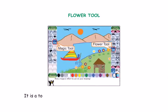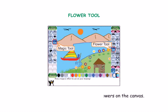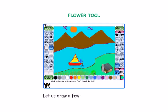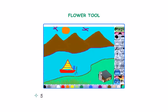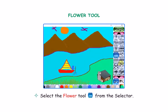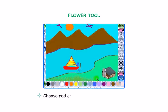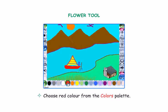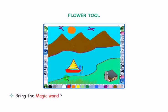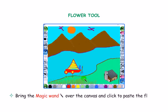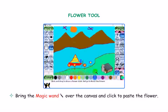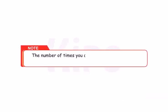Let us learn about the Flower Tool. It is a tool using which you can draw flowers on the canvas. Select the Flower Tool from the selector and choose red color from the colors palette. Bring the magic wand over the canvas and click to paste the flower. The number of times you click, the same color of flowers will be added on the canvas.